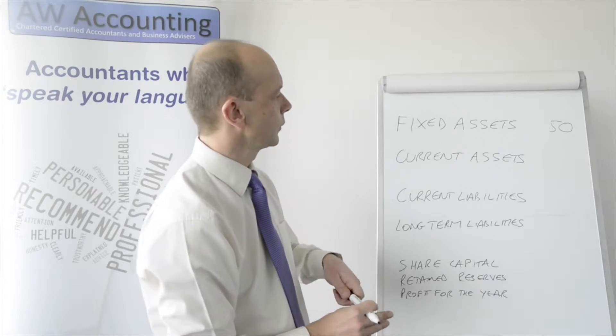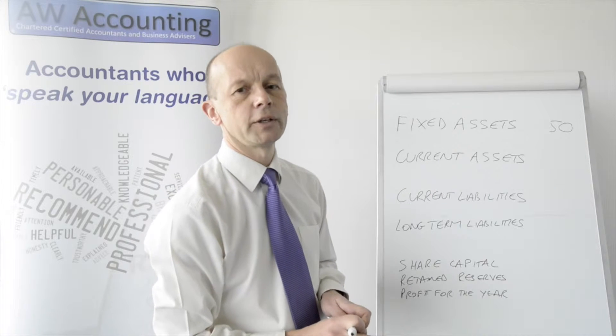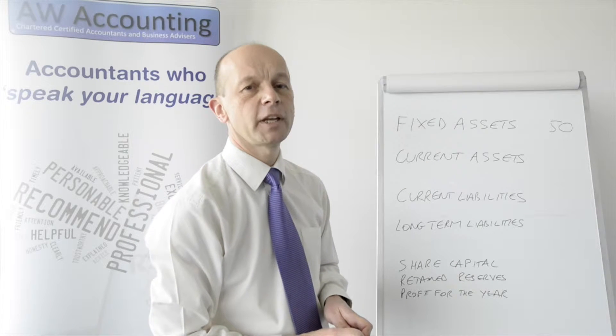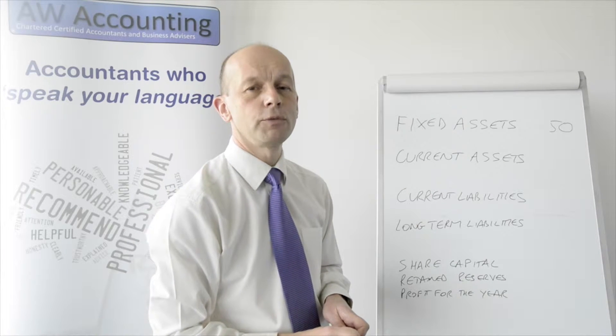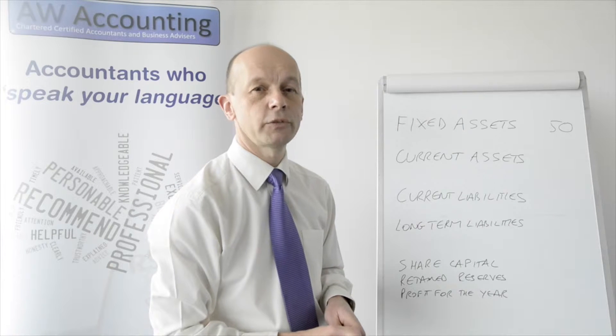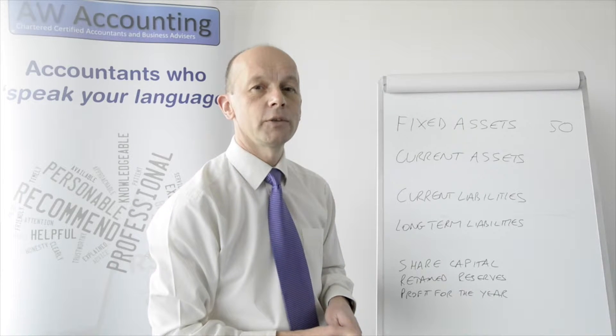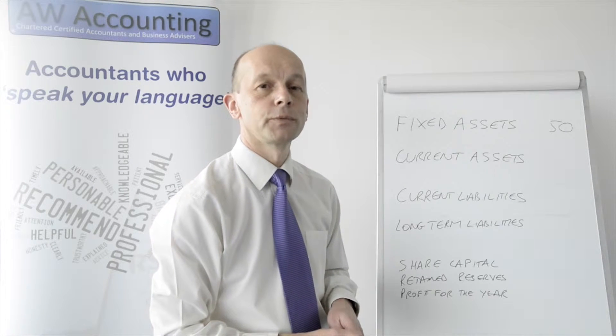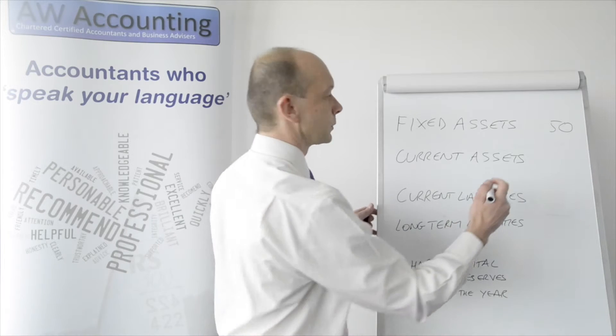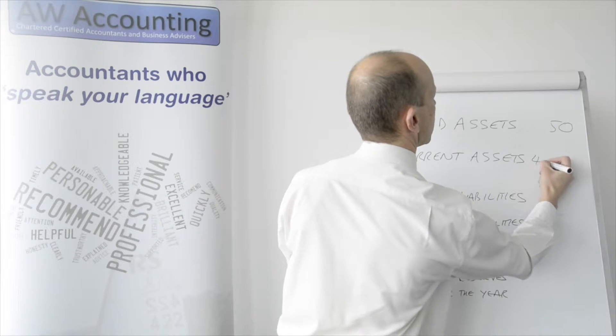Then we have current assets and current liabilities. Current assets are things that are cash or will turn into cash. So current assets would include things like the money in the bank account, the stock that you've got which will obviously turn into cash when it's sold, and the debtors — that's the money you're owed. We've got current assets of £40,000.